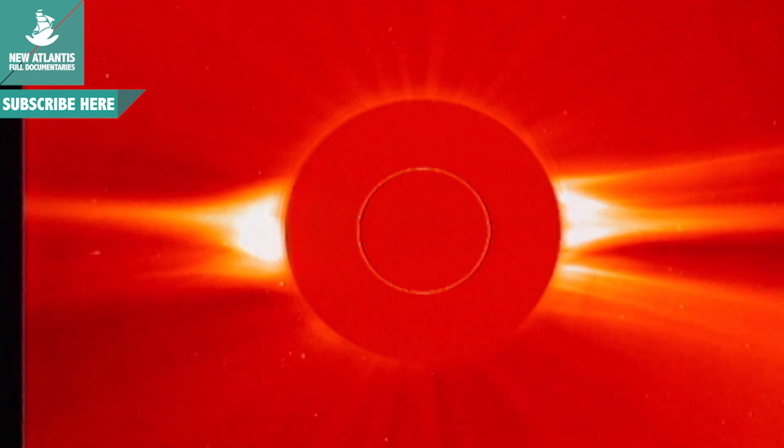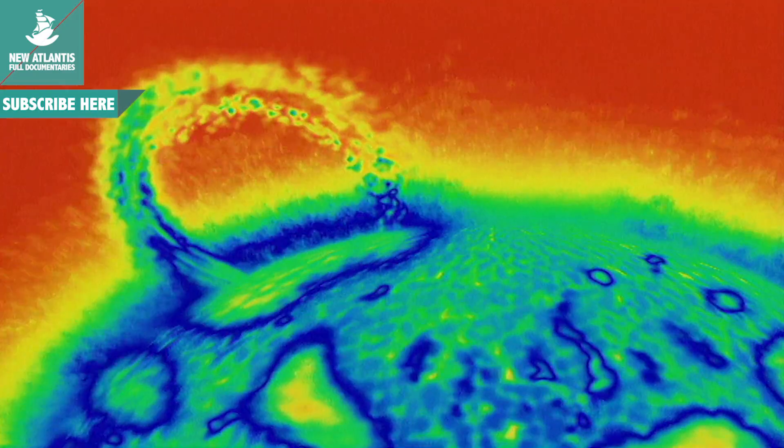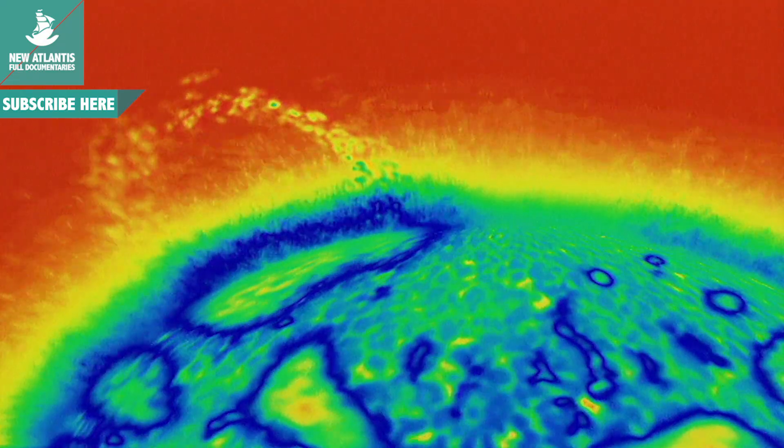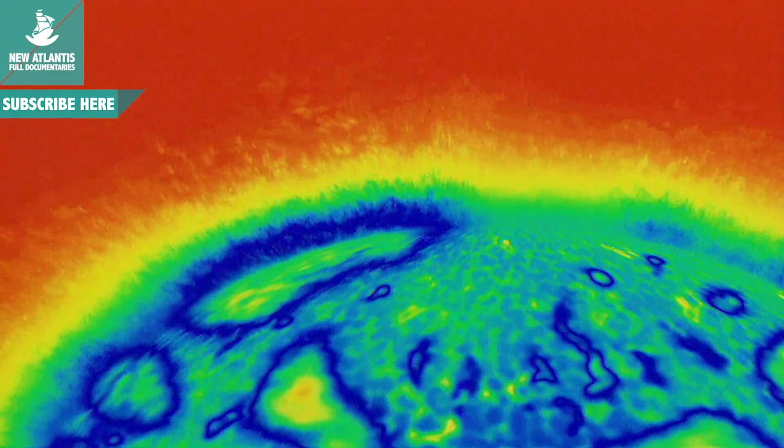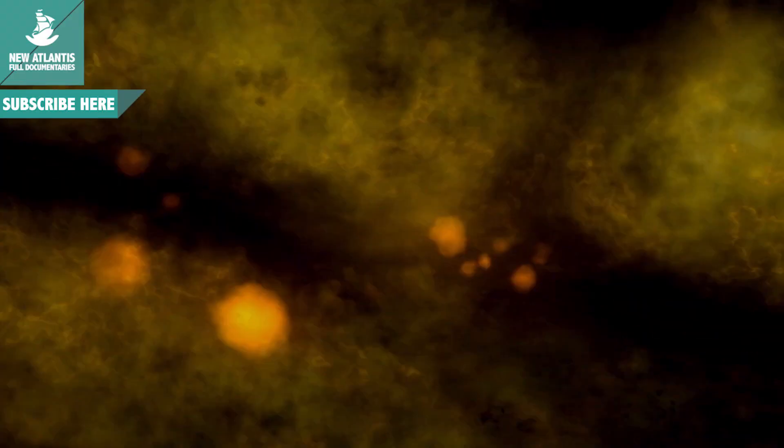Astronomers estimate that the sun's core is subject to pressure approximately 225,000 times greater than that exerted by our atmosphere on the surface of the Earth. On the sun, temperatures reach 15 million degrees centigrade. The combination of such tremendous heat and pressure is what causes nuclear fusion.